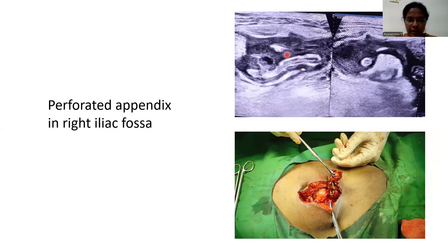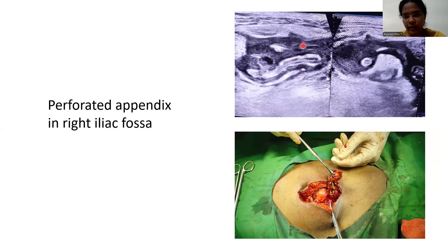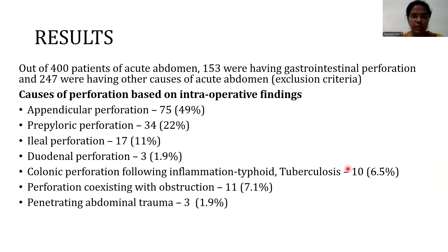Perforated appendix in the right iliac fossa. This patient presented with acute abdominal pain and was suspected to have perforation clinically because of guarding at the right iliac fossa. We can see an inflamed appendix with a suspicious breach at the base, inflamed adjacent bowel loops, and free fluid. It came out to be a perforated appendix.